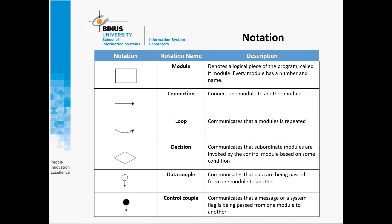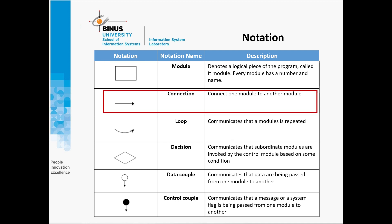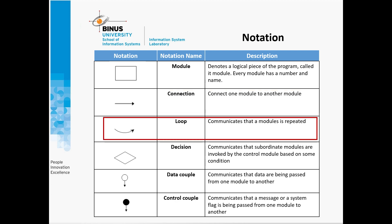This is the notation that can be used to build a structure chart. First, module — a module denotes a logical piece of the program, and every module has a number and name. Second, connection — a connection connects one module to another module.